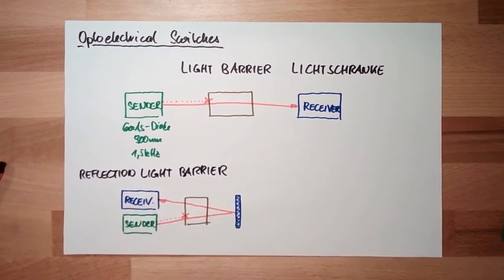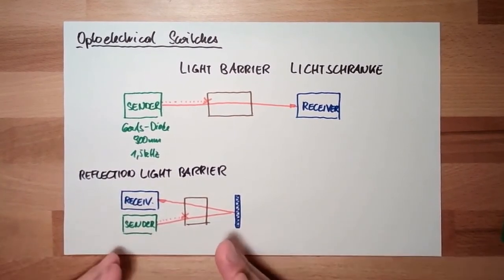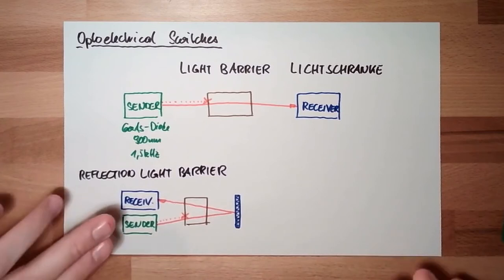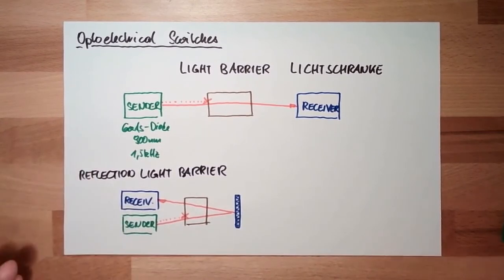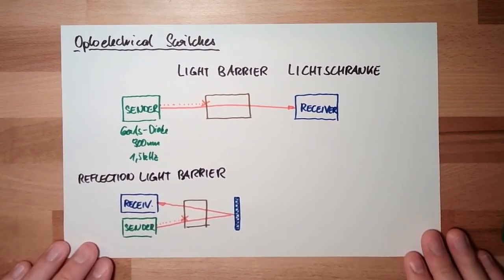Reflection light barrier works as well. Here, receiver and sender are at one side. What might be convenient.